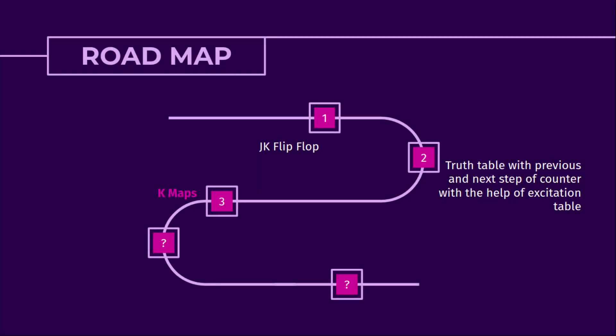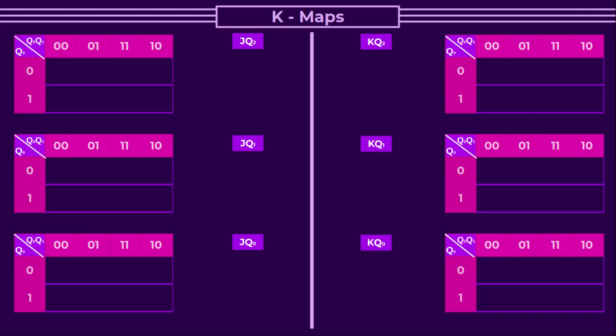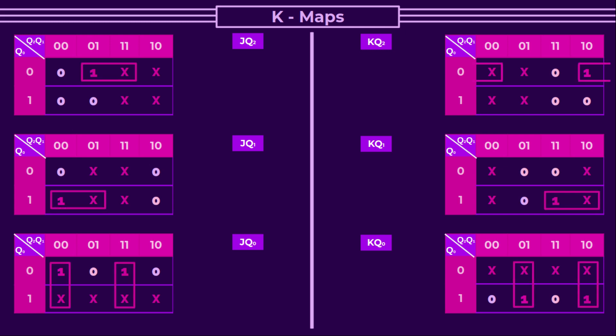Next, we will create k-maps for each flip-flop input based on the truth table — k-maps for JQ2, KQ2, JQ1, KQ1, JQ0, and KQ0 — with Q2 and Q1 arranged horizontally and Q0 arranged vertically. We will fill the k-maps according to the truth table with 0, 1, or don't care conditions. Then we will group the cells to get the expression for all the k-maps. The highlighted cells are grouped together in each k-map to find input expressions for the JK flip-flops.